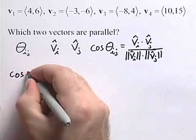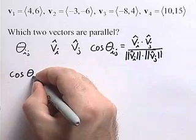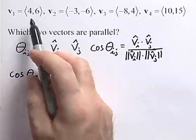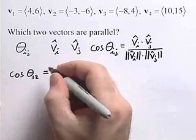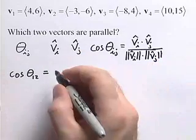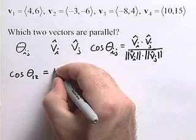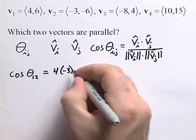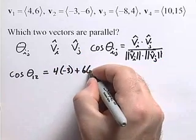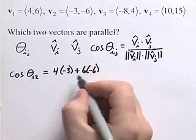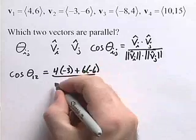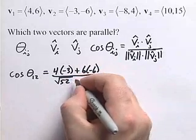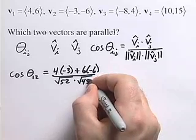So we'll have the cosine theta subscript 1, 2. We're looking at vectors 1 and vector 2. If we put in our components, we'll get 4 times negative 3 plus 6 times negative 6 divided by the square root of 52 times the square root of 45.